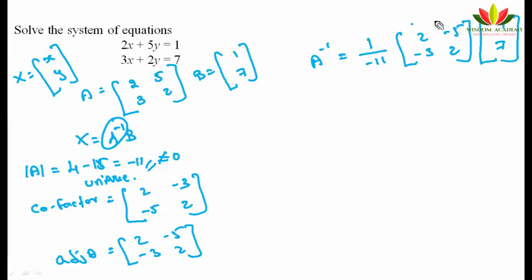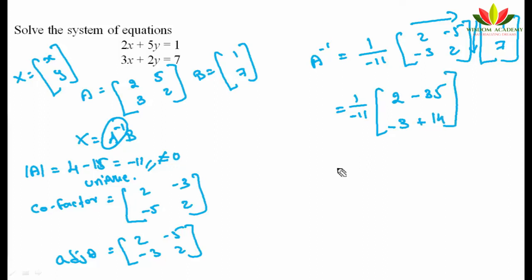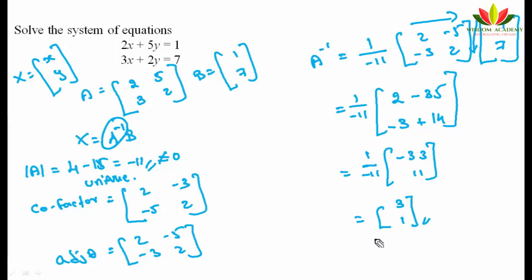Multiplying A⁻¹ by B: x = (1/-11) × [2(-) + (-5)(7); (-3)(1) + (2)(7)] = (1/-11) × [2 - 35; -3 + 14] = (1/-11) × [-33; 11]. Therefore x = 3 and y = -1.